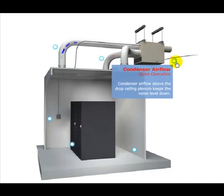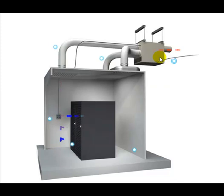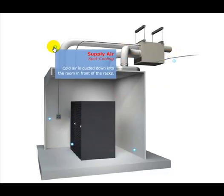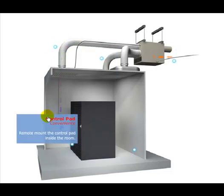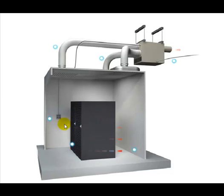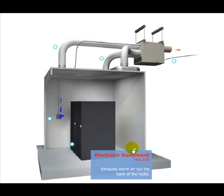And here you have the condenser air flow comes in through the back of the unit. And then you have your supply air, your cold air comes down, flows in front of the server rack, gets drawn in through the rack, and then out the back.